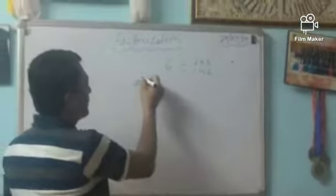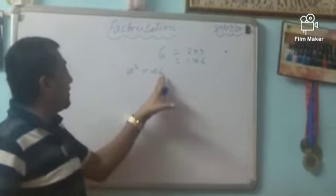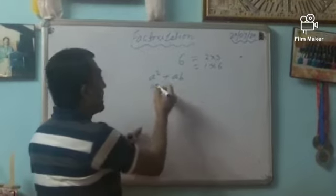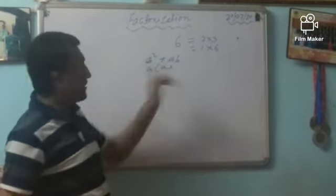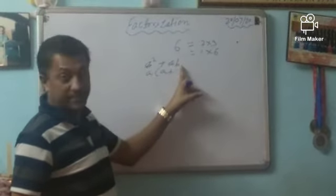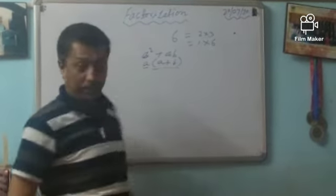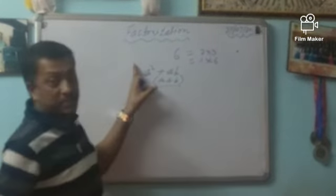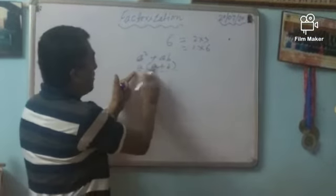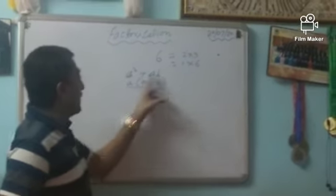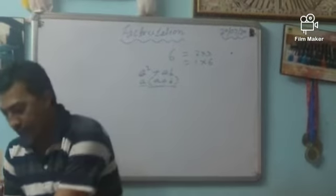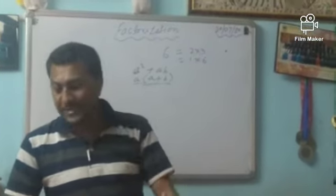For example, if a² + ab is there, what is common? The term 'a' is common in both. So we take 'a' as common — the rest from a² is 'a', and the rest from ab is 'b'. So it becomes a(a + b). Whenever we have to find the factorization, we write in a form such that when we multiply it gives back the same algebraic expression. We have to follow some rules and techniques.